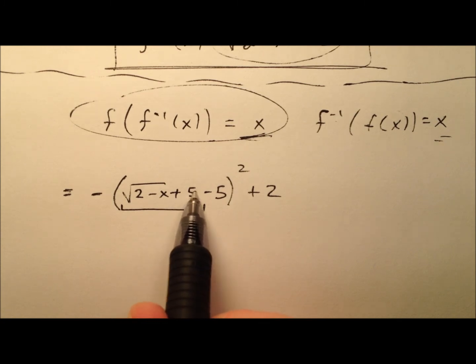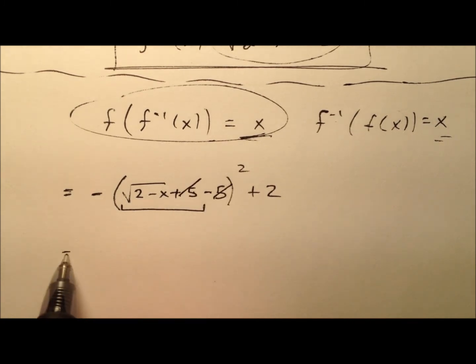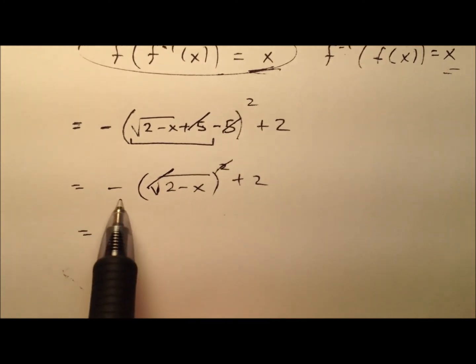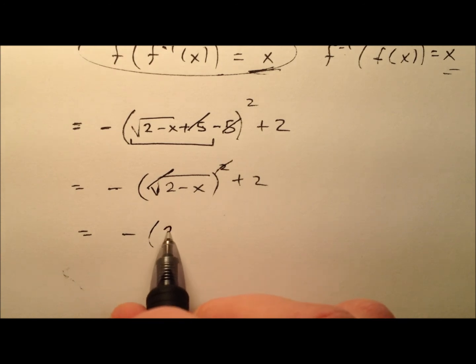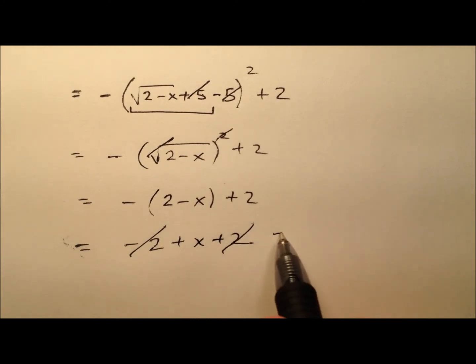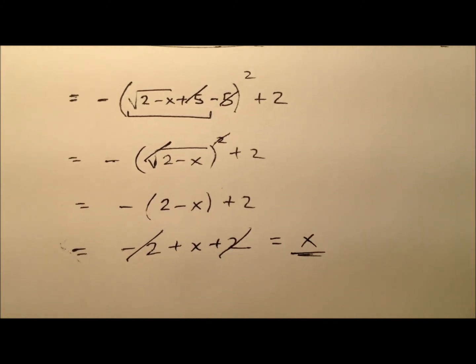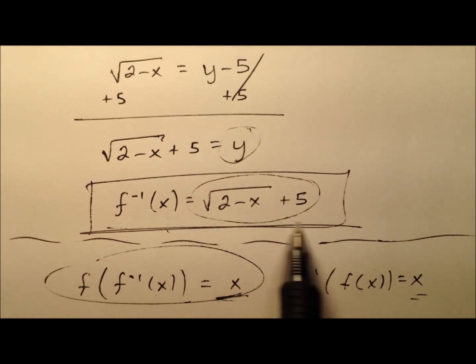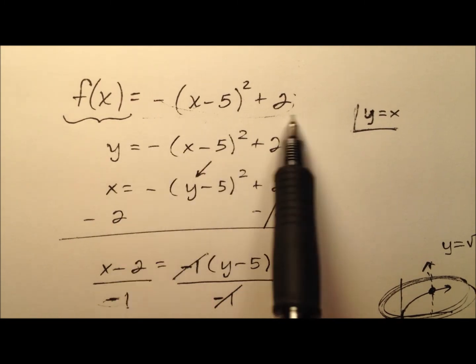So inside these parentheses plus 5 minus 5, okay, well those guys are going to cancel. And so what I'm left with is the square root of 2 minus x inside this little square. Well, the square root and the square cancel out, but be careful of this minus because he's still there. And so it'll look something like this. When I distribute the negative, it'll be negative 2 plus x plus 2. Yeah, the 2s will cancel and I'm left with x. So I can see and kind of verify this algebraically that indeed this function is the inverse function for this original one.